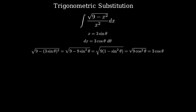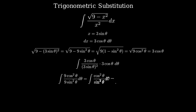First, we simplify the square root of 9 minus x squared by plugging in 3 sine theta. We simplify this: 3 cosine theta times 3 cosine theta is 9 cosine squared theta, and 3 sine theta squared is 9 sine squared theta.